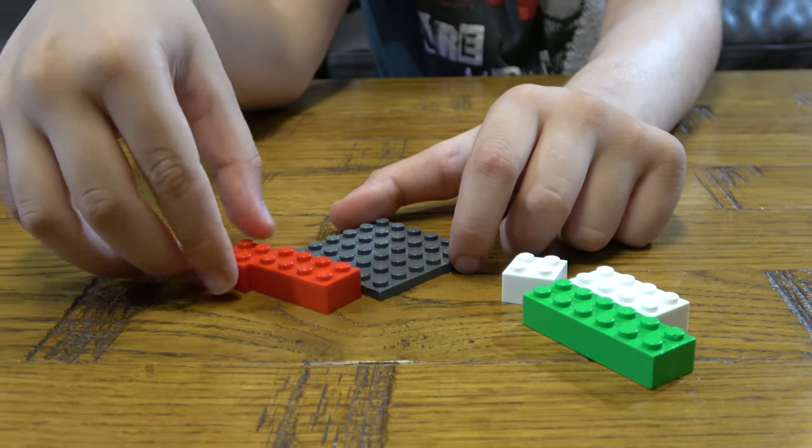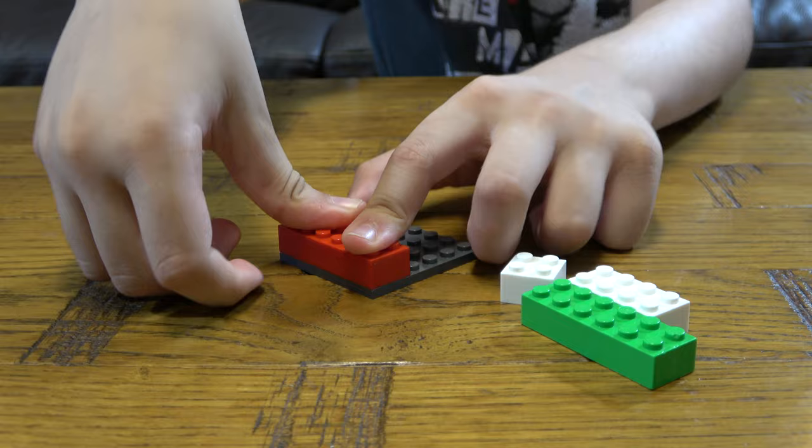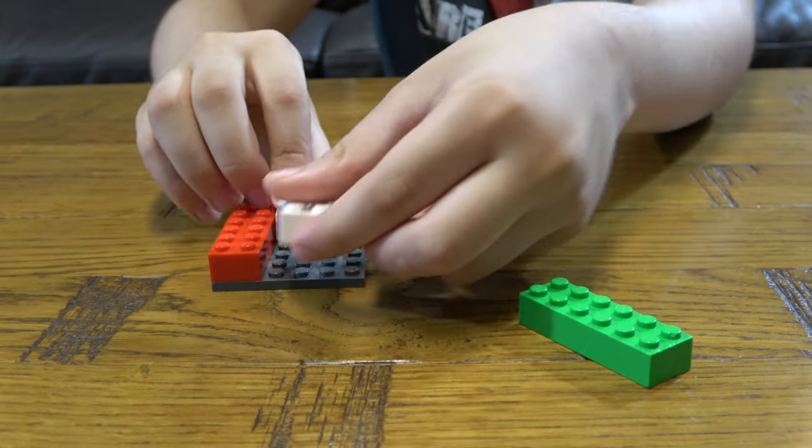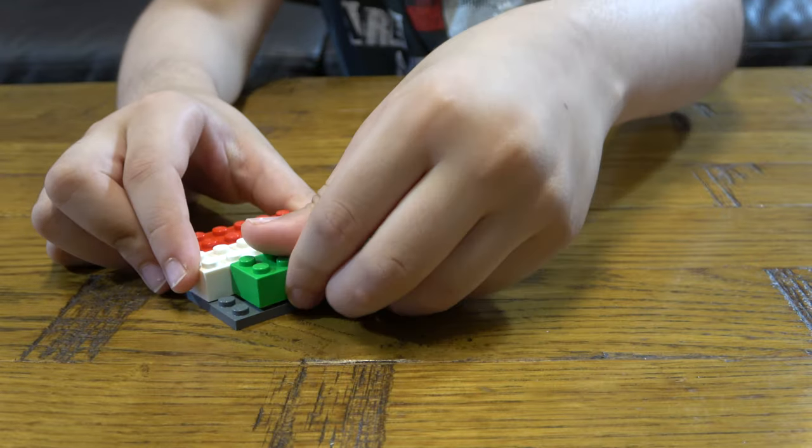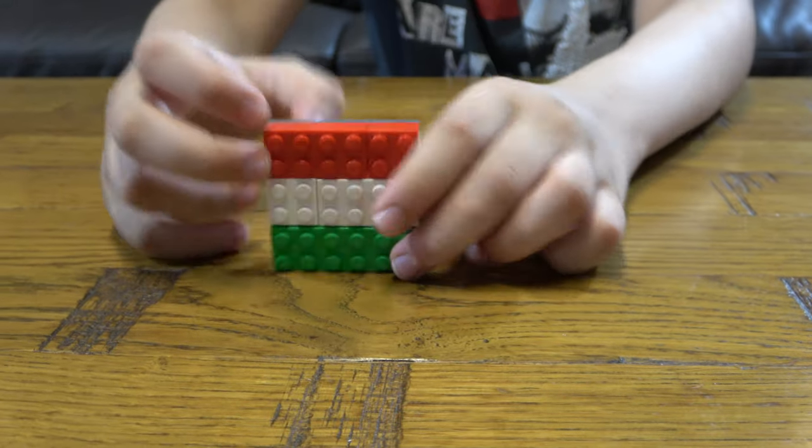let's do it. You just put the red at the top, white in the middle, and green at the bottom. Here is Hungary.